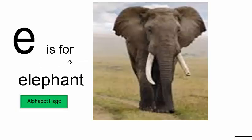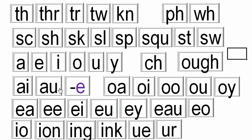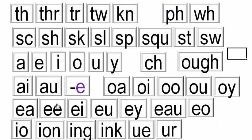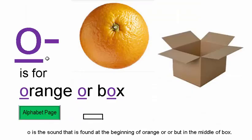E is for ELEPHANT. I is for LIPS or ZIPS. O is for ORANGE — the O sound is found at the beginning of ORANGE.